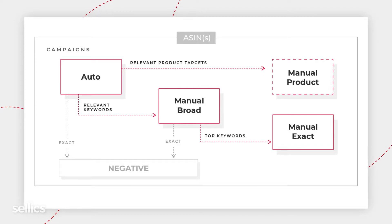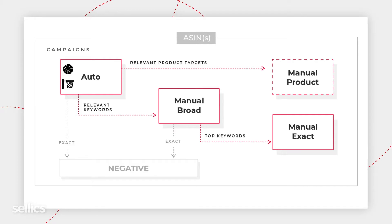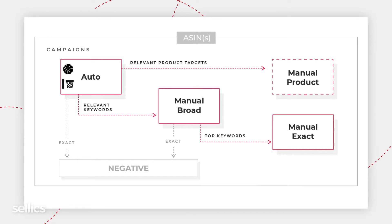Let's look into our example. We're selling a men's basketball and our auto campaign will bring in two search terms right away: Basketball and Basketball Net. Basketball Net will start getting a couple of clicks at the beginning. However, the term does not really make sense with what we're selling. If a customer on Amazon is searching for a Basketball Net, they're not going to buy a Basketball. So Basketball Net is going to collect a few clicks but no orders. Ad waste is clicks which you pay for — since this is PPC — but no sales.